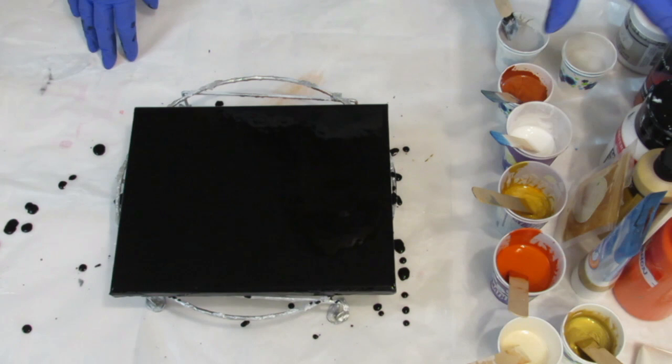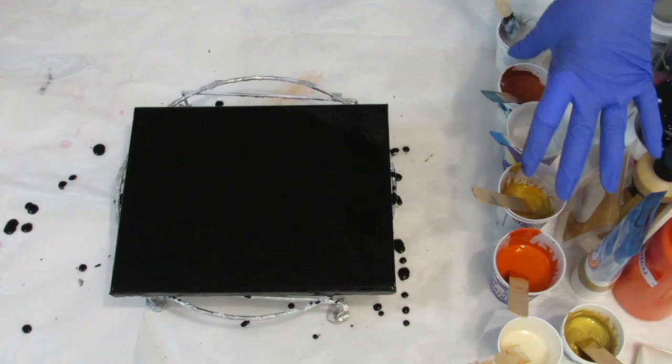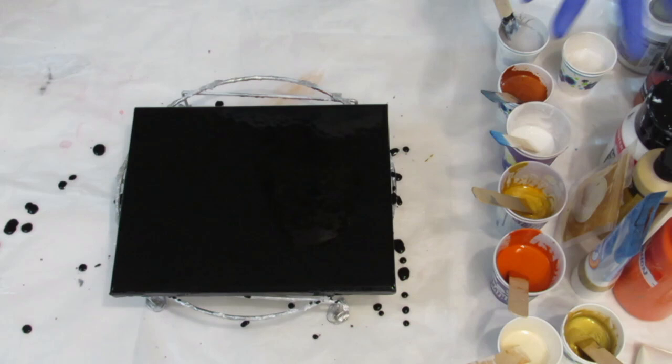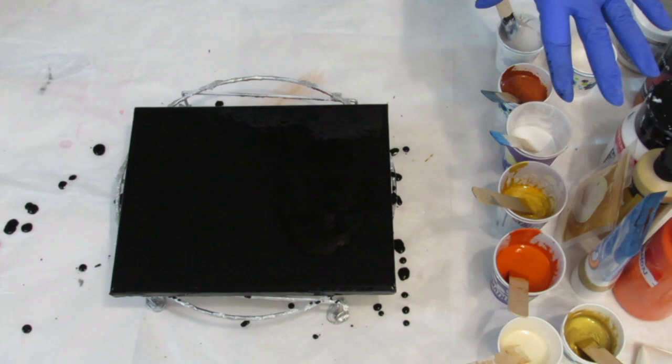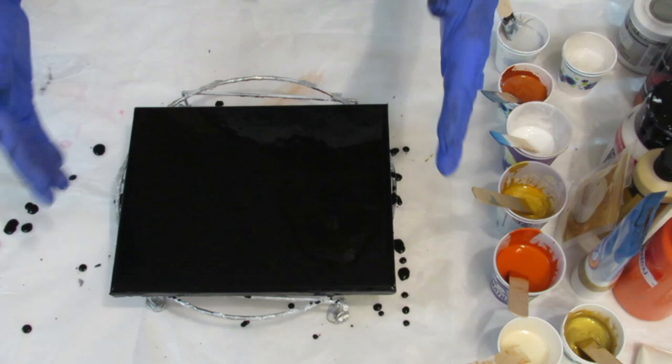Most of these are mixed colors so I don't know the ratios, but my medium today is Floetrol, probably about 90% Floetrol, 10% GAC 800. A few of these have a little bit of polycrylic in it because they're pigments and I really needed to get them dissolved before I put them in the cup and mixed them with the other colors.